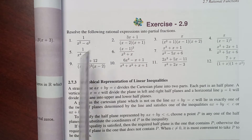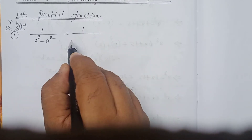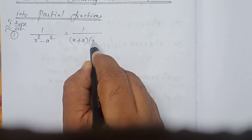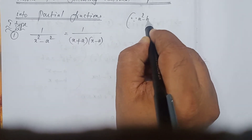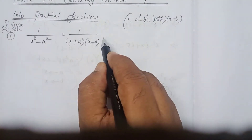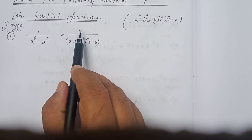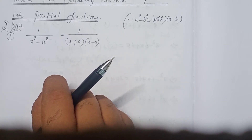Type number 1: 1 divided by x squared minus a squared. Write the numerator as it is. The denominator x squared minus a squared can be written as (x plus a) into (x minus a), by using the identity a squared minus b squared equals (a plus b) into (a minus b). Here, the numerator degree is less than the denominator degree, so we can say it is a proper rational expression.